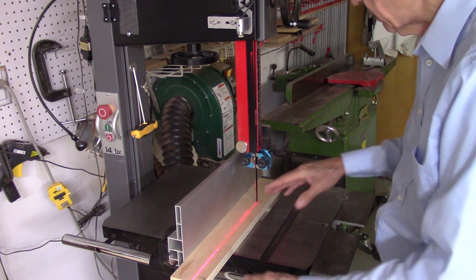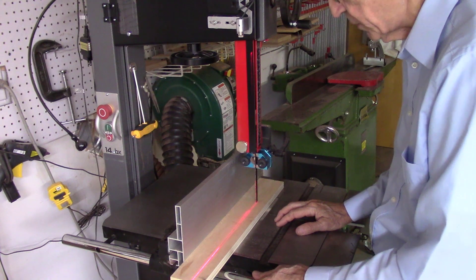You can see now this laser beam was pre-adjusted previously and that laser beam goes right through the curve on that bandsaw blade cut.